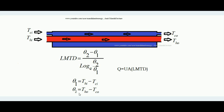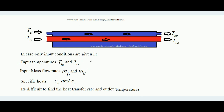Here theta-2 is the exit temperature difference of the two fluids, equal to T_HO minus T_CO, and theta-1 is the inlet temperature difference, equal to T_HI minus T_CI. Substituting these values gives LMTD. The heat transfer rate for this heat exchanger is Q = U·A·LMTD, where U is the overall heat transfer coefficient and A is the area of exposure through which heat is transferring.